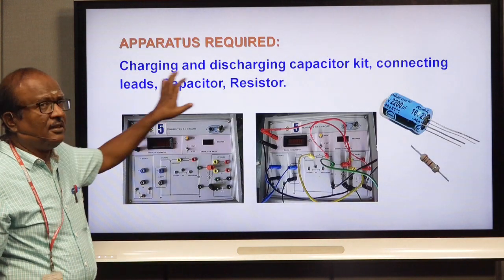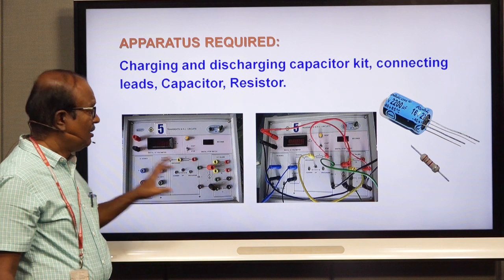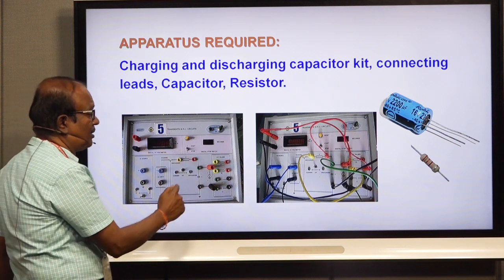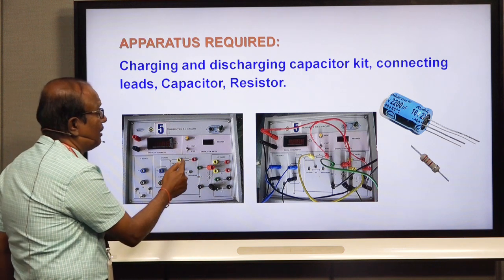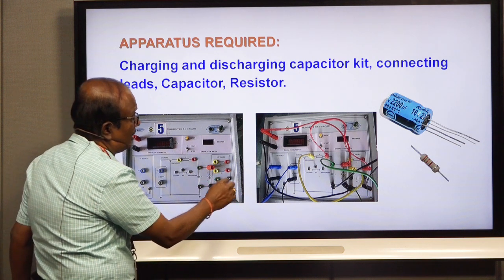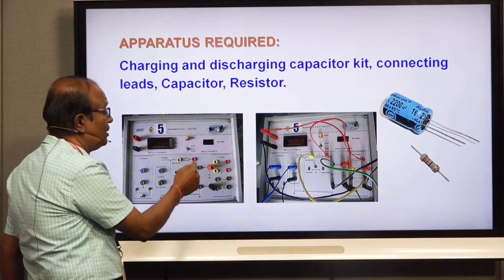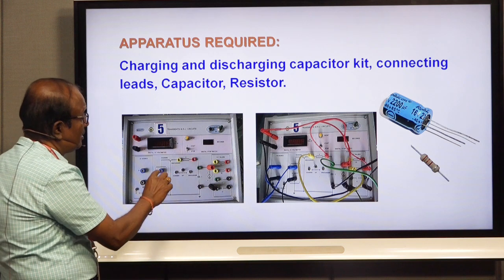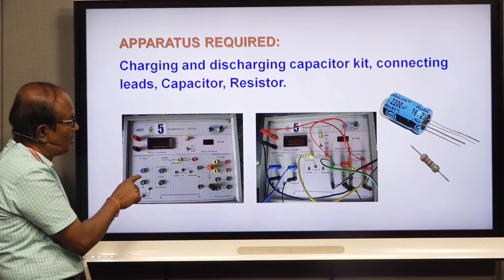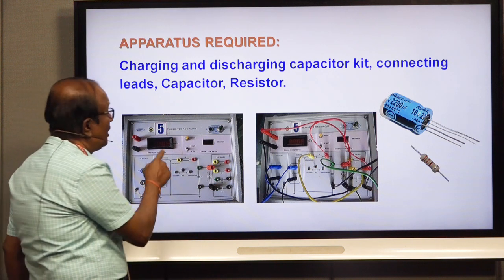Now let me explain the experiment using the experimental kit — the charging and discharging kit. It has a simple circuit with a capacitor and a resistor. The capacitor can be connected to any one of the terminals. We have two capacitors C1 and C2 and two resistors R1 and R2. There is also an input DC source which supplies voltage to the circuit.